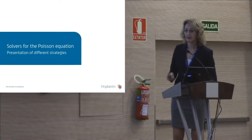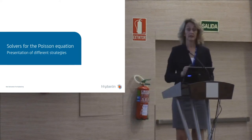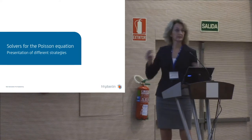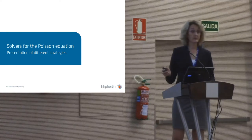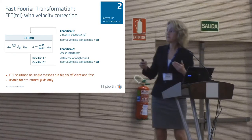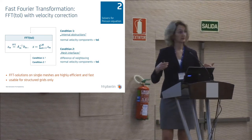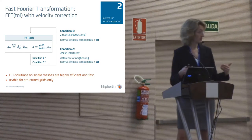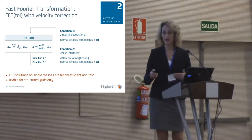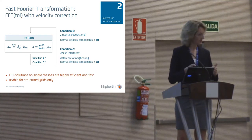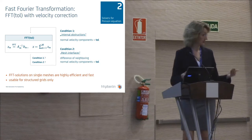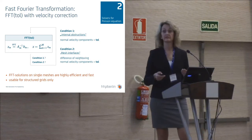Now we have heard about two different grid types. I will present three different solution techniques which use those different grid types. Let me start with the currently used FFT method. This is based on the local application of FFT methods on every single mesh. Those local solutions are coupled together to a global solution by some kind of averaging process along the mesh interfaces. But FFT is only able to work on structured grids, so we need this additional velocity correction.